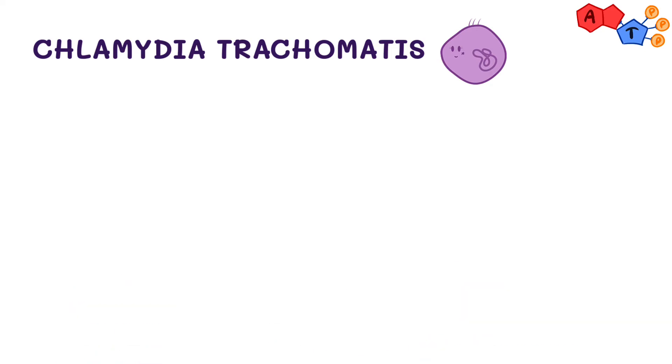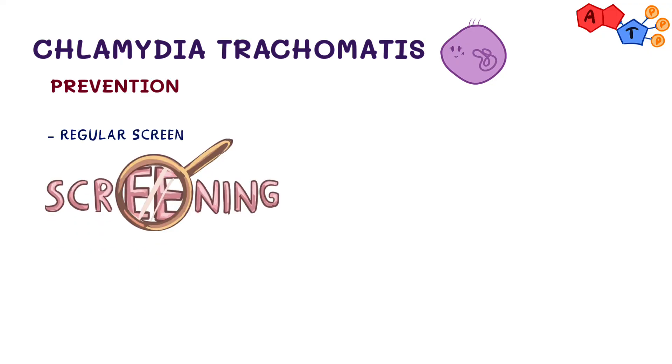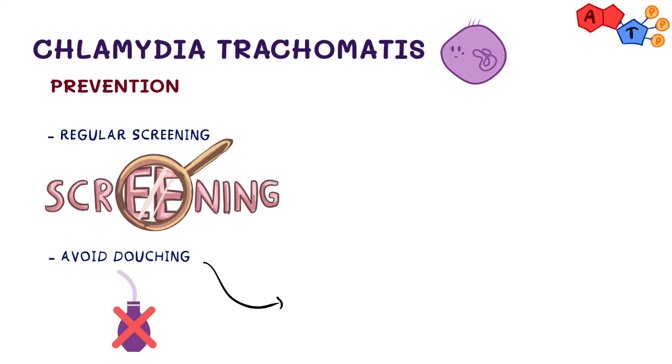Now the question is: how can we prevent Chlamydia? It can be prevented with regular screening and avoiding douching, because douching decreases the number of good bacteria in the vagina.